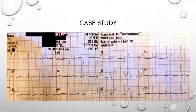Having spotted the hyperacute T wave changes, Adam sent the ECGs through to the cath lab and after some deliberation they accepted the patient for PPCI. The cardiologist found a complete LAD occlusion distal to the circumflex and severe disease in all the other vessels. The patient received a stent in the left anterior descending artery with a plan for urgent quadruple bypass.